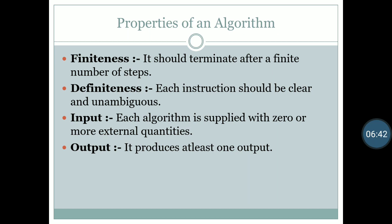Second property: definiteness. Each instruction should be clear and unambiguous — unambiguous means clear. After reading each instruction, we should know exactly what that step is saying; no ambiguity can be in it. Third property: input. Each algorithm is supplied with zero or more external inputs — for example, if we are just printing hello world, that algorithm will not have any input. Fourth property: output. An algorithm must produce at least one output.